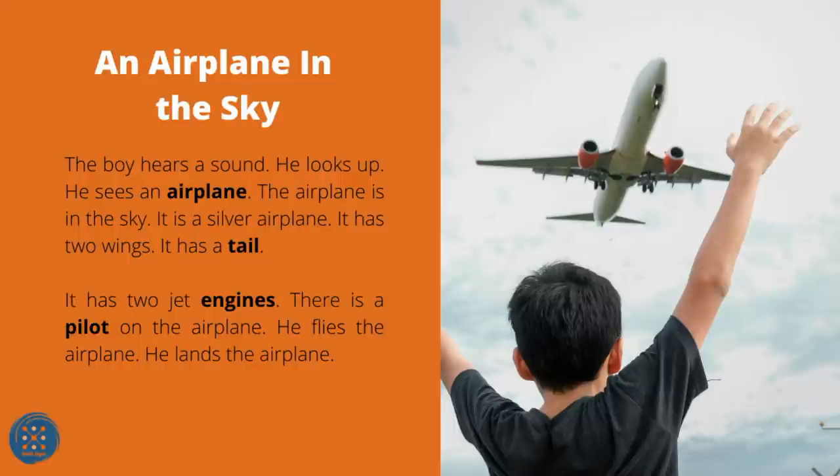An Airplane in the Sky. The boy hears a sound and looks up. He sees an airplane in the sky. It is a silver airplane. It has two wings, a tail, and two jet engines. There is a pilot on the airplane. He flies the airplane and lands it.